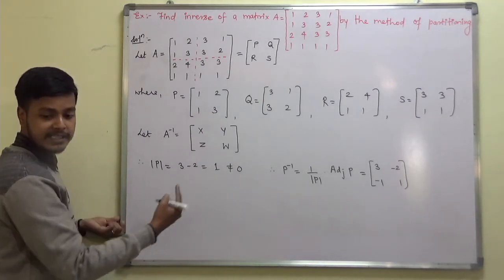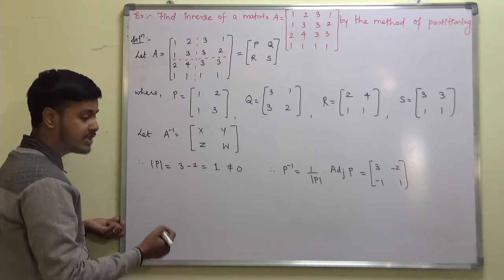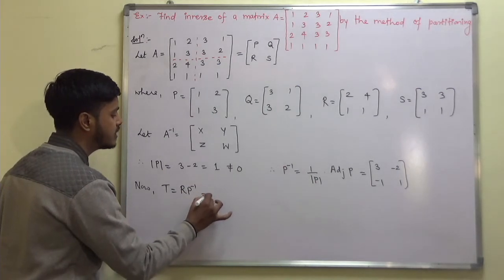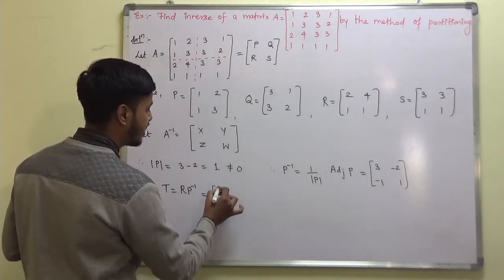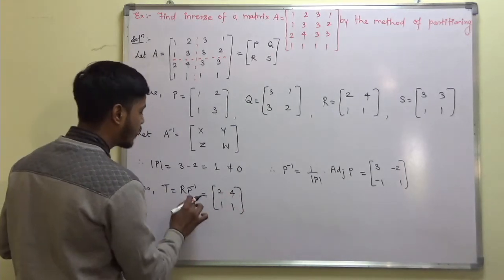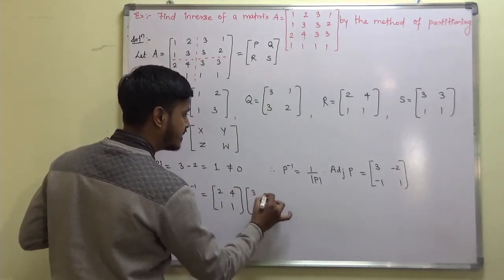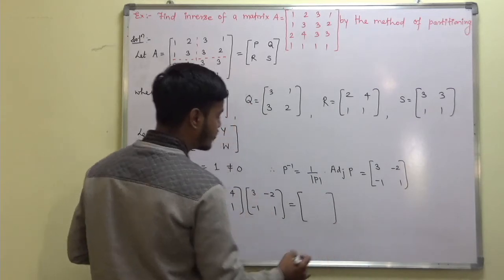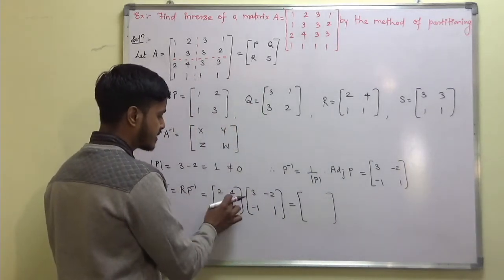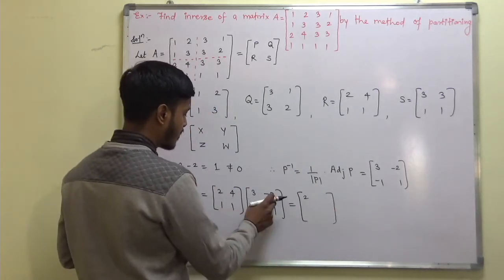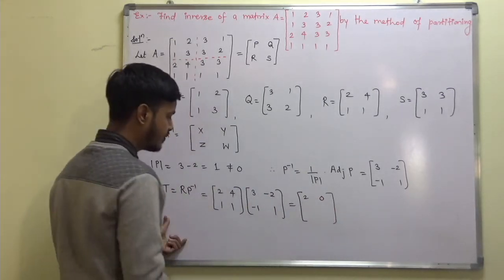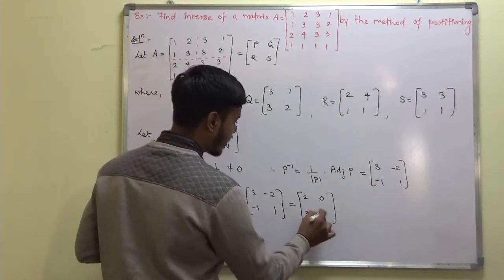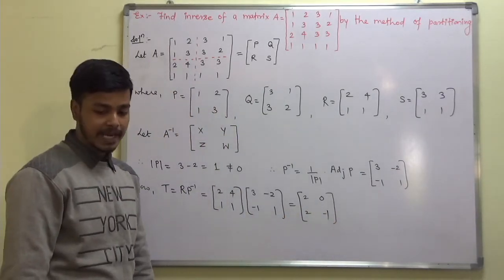After getting P inverse, you can find out T. T is R times P inverse. R is the 2 by 2 matrix: 2, 4, 1, 1. P inverse is 3, minus 2, minus 1, 1. Multiplying these, we get: 6 minus 4 is 2, minus 4 plus 4 is 0, then 3 minus 1 is 2, and minus 2 plus 1 is minus 1. So T equals 2, 0, 2, minus 1.